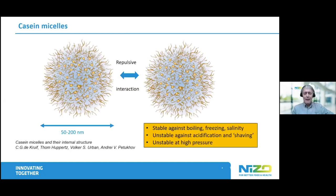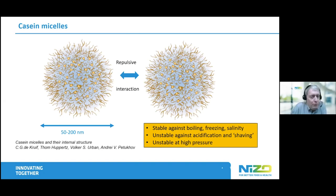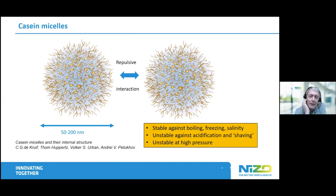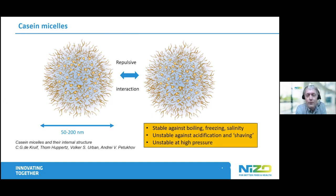Small-angle neutron scattering. Here is one of the many depictions of casein micelles. Most people know that the stability of casein micelles comes from the steric repulsion of the hairy layer on the outside, made by the kappa casein. Destabilizing casein — you can do that by cutting off the hairs, and then you make cheese, or you can collapse the hairs and then you make yogurt. The latter you do with acidification and the former you do with an enzyme.